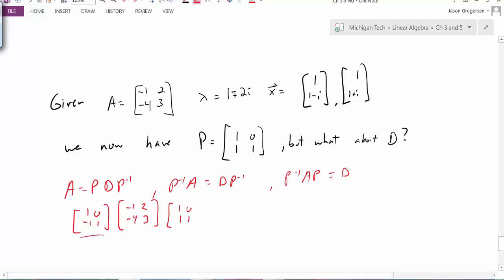To see that, I can see that the determinant of P is just 1 minus 0, which is 1. And then I just have to switch the values on the strong diagonal and change the sign of the off diagonal. And this is the result.